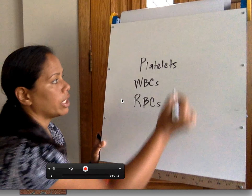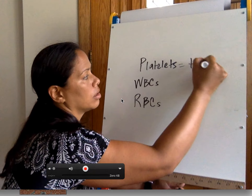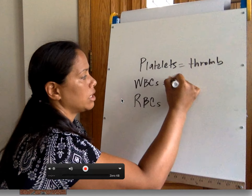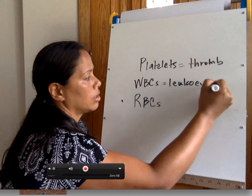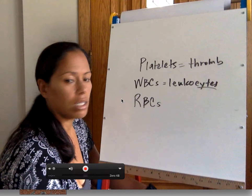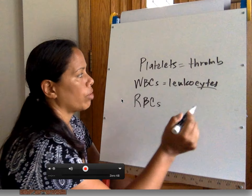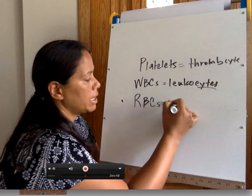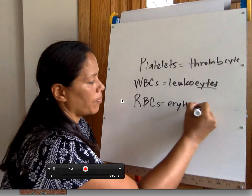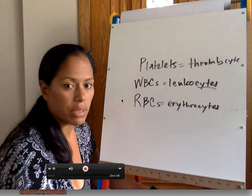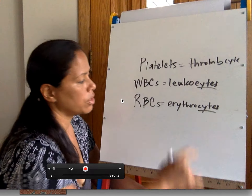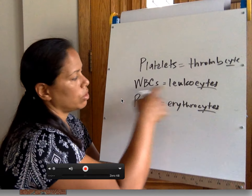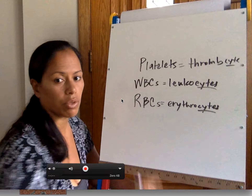Platelets are also known as thrombocytes. White blood cells are also known as leukocytes — 'cyto' means cells, 'leuko' meaning white. Thrombocytes referring to platelets, leuko referring to white, and erythrocytes referring to red blood cells.